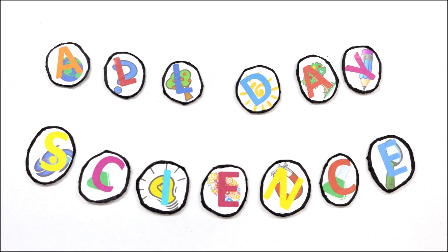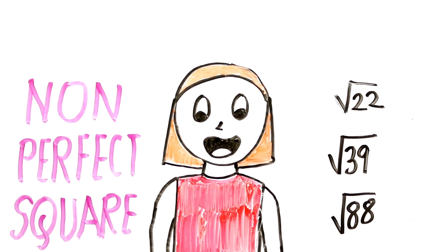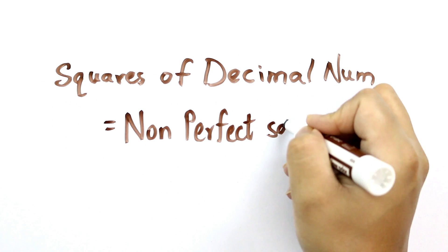In this video, you will get to know some of the best tricks to find square root of a non-perfect square. Non-perfect squares are numbers which are squares of decimal numbers.